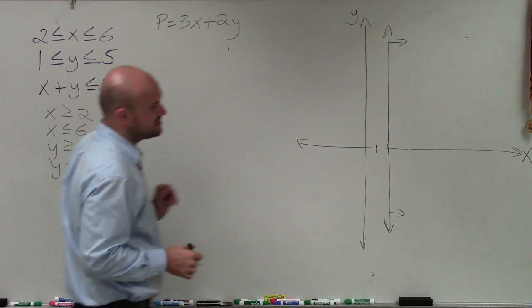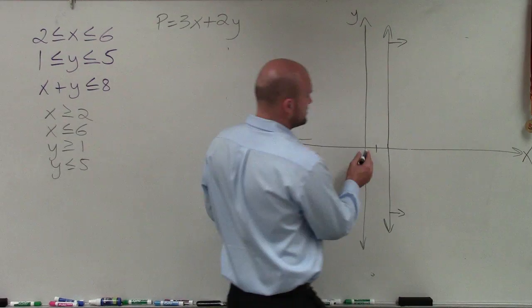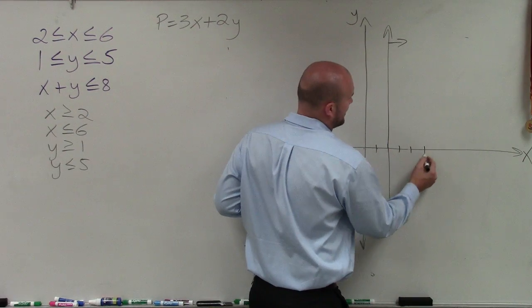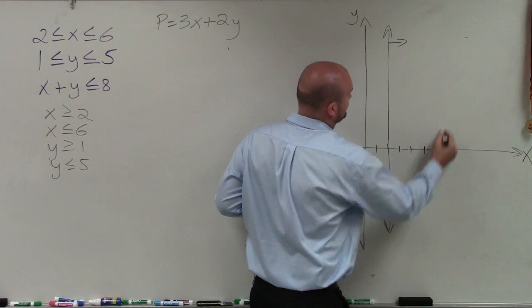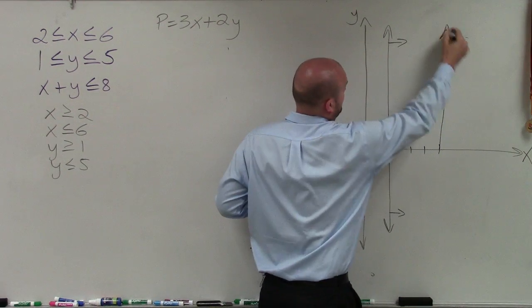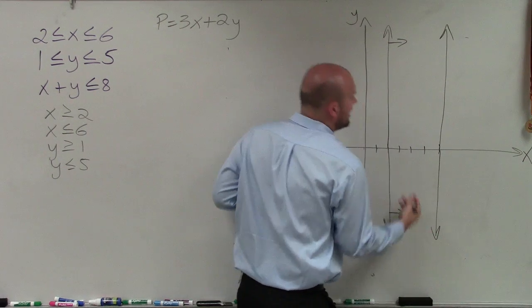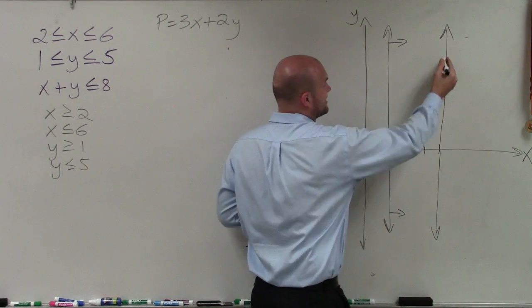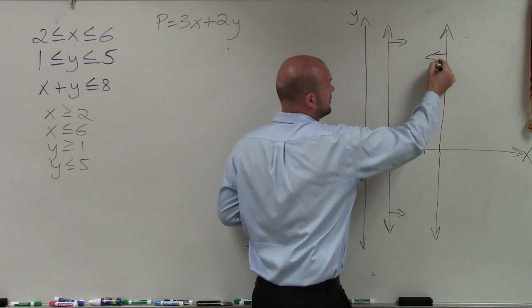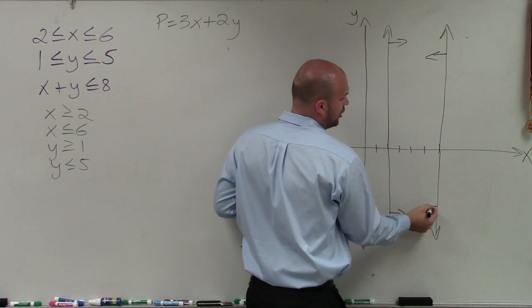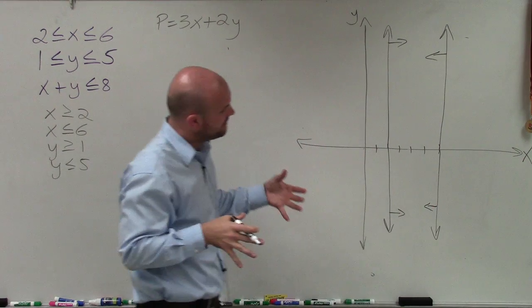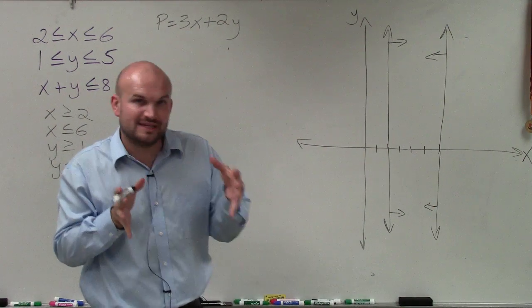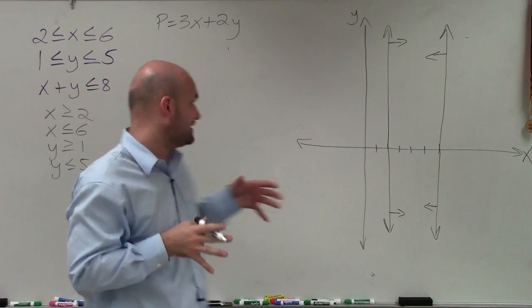Then x has to be less than or equal to 6, so I go over to 6 on the x-axis and draw a vertical line. All values that are going to be less than 6 are all points to the left. So now I have a feasible region between these two vertical lines.